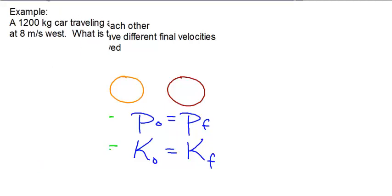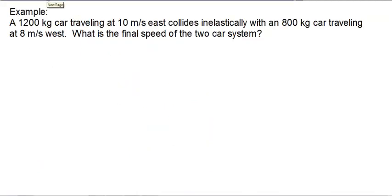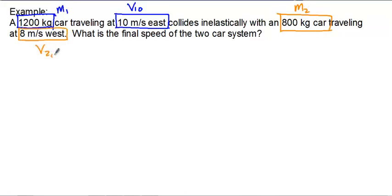All right. So let's work one quick example. We'll do an inelastic collision. In our example, we have a 1,200-kilogram car traveling 10 meters per second east, collides inelastically with an 800-kilogram car traveling at 8 meters per second west. What's the final speed of the two-car system? So we'll make the 1,200-kilogram car car 1, so M1. It's initially traveling at 10 meters per second east, so that's V1₀. Our 800-kilogram car is mass 2, M2. And its initial speed is 8 meters per second west. What do you notice about the velocities? That's right, they're in opposite directions. So when we plug them into our momentum relationship, they must have opposite signs.